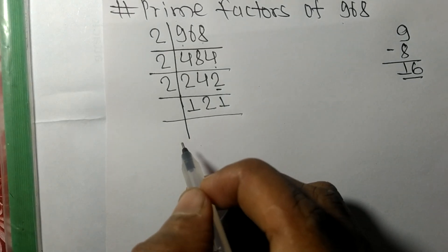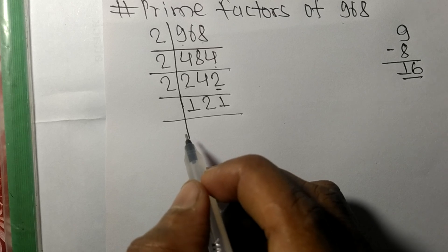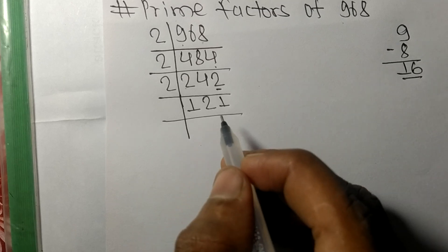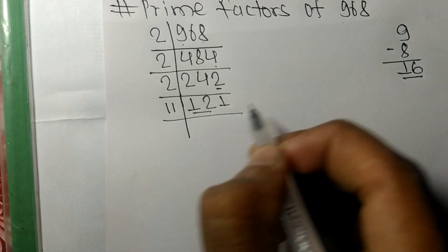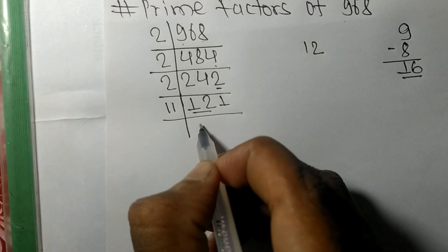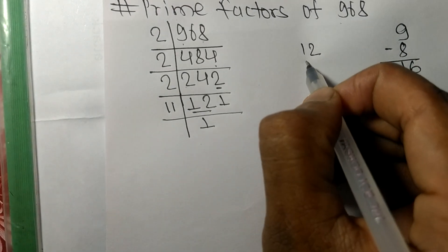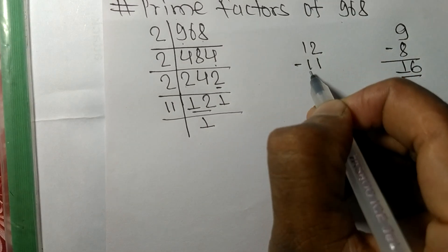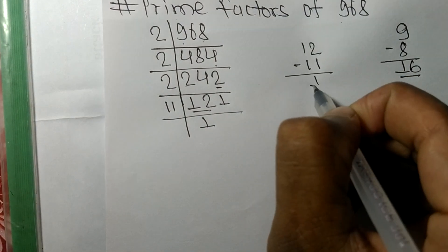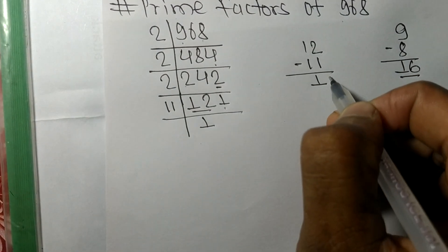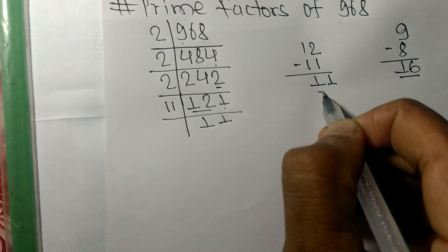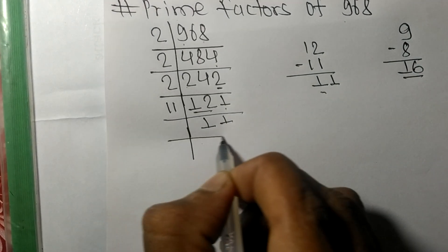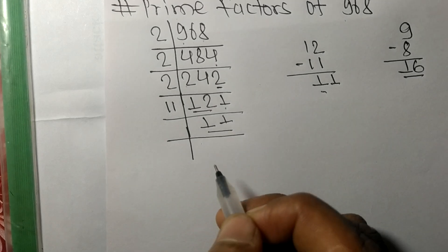First we have 12, so 11 times 1 mean 11. On subtracting we get 1. This 1, 11. So 11 times 1 mean 11. So now we got 11.